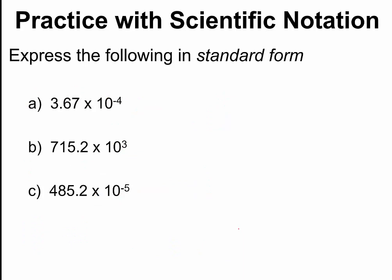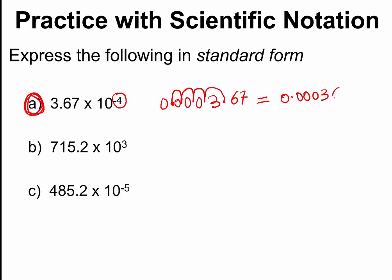We should also know how to convert a number in scientific notation back to decimal form. The first example has an exponent of negative 4, which tells me the original number is smaller than 1 — something like 0.something. Starting with 3.67, I count 4 places — the decimal moves here, and we fill with zeros. The original number is 0.000367.